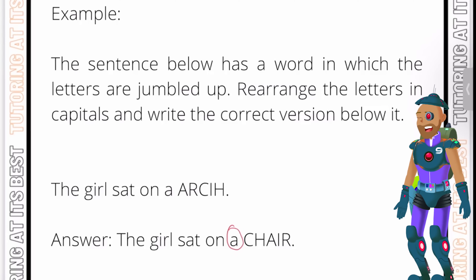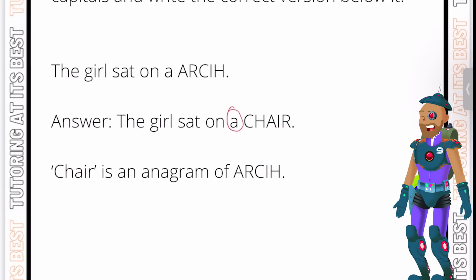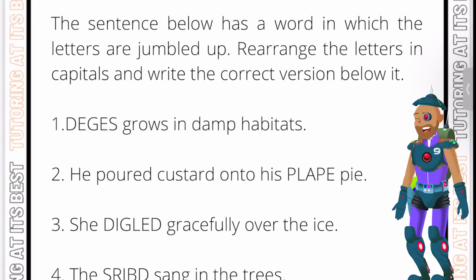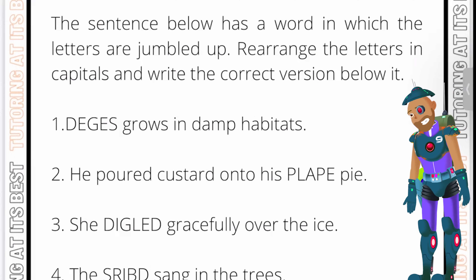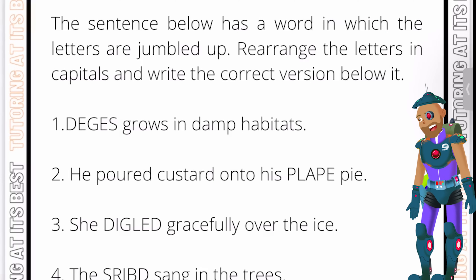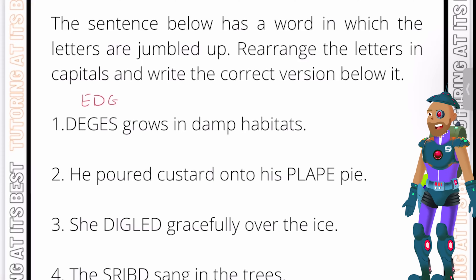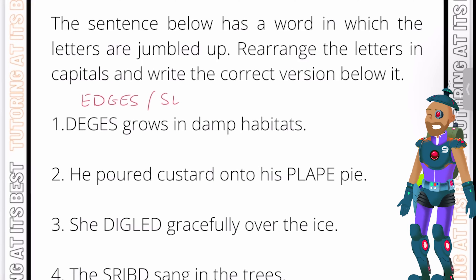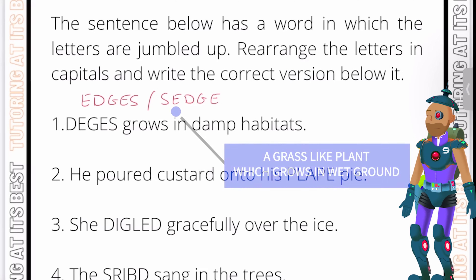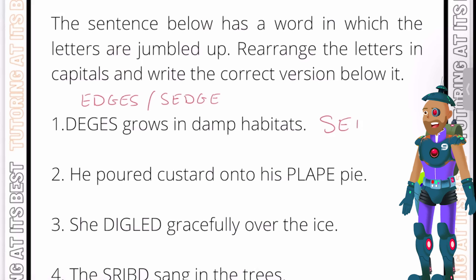Let's now go ahead and dive into the first set of questions. The word 'chair' is an anagram of A-R-C-I-H. Question one: something grows in damp habitats. If we unscramble this word and rearrange the letters in capitals, the word that comes to mind is either 'edges' or 'sedge'. Edges would not work in this case, so the answer is 'sedge' — a grass-like plant which grows in wet ground.